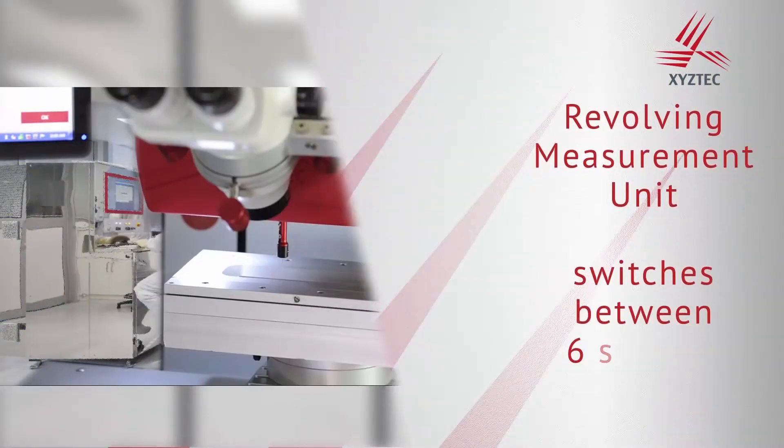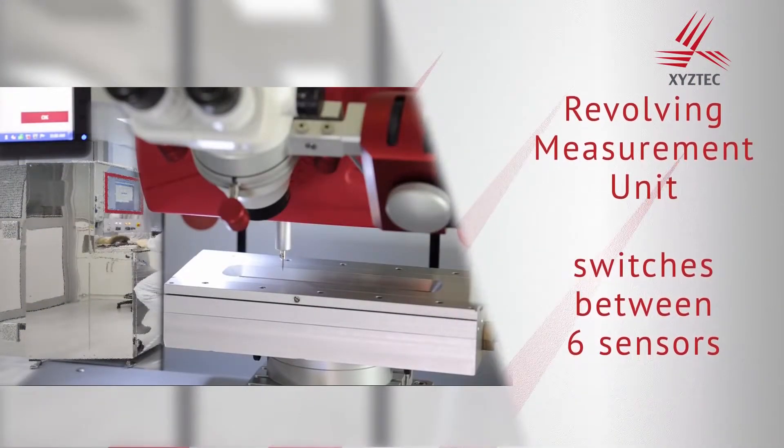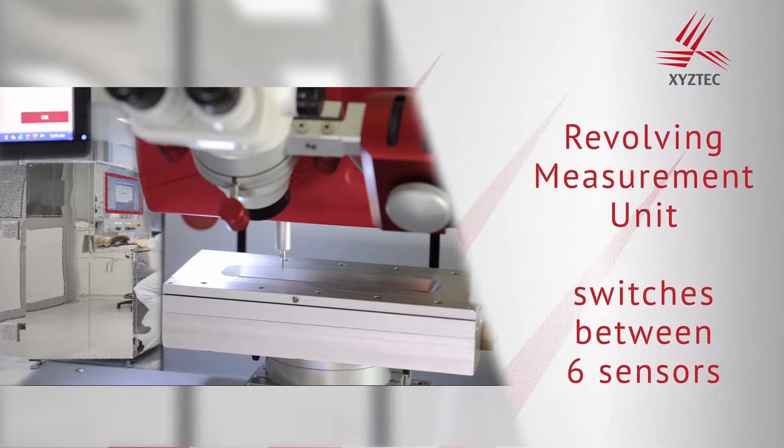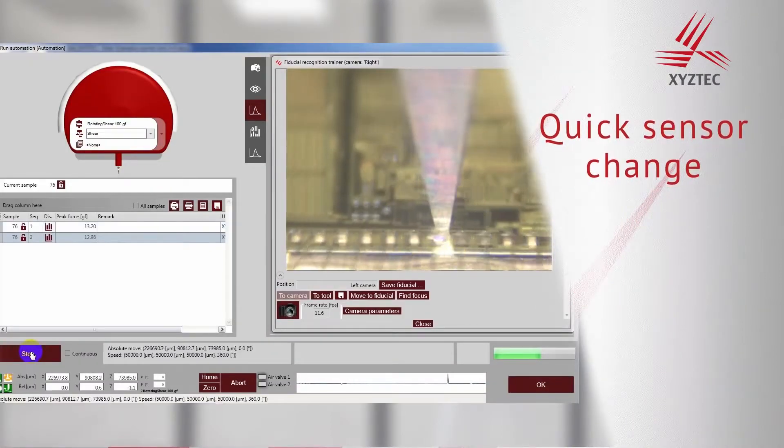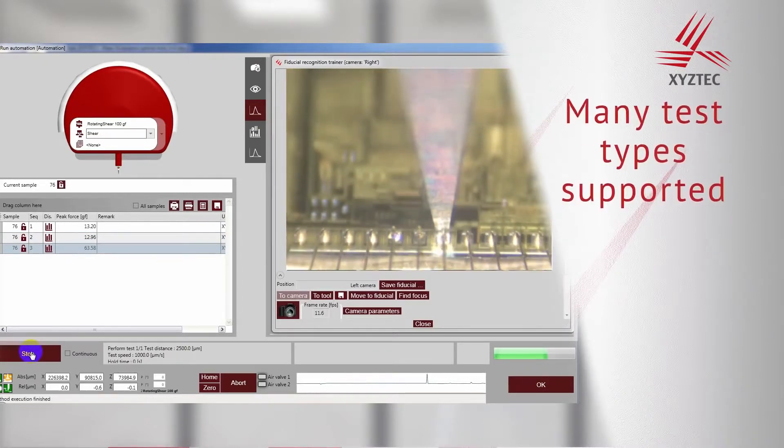Only Zeistec offers customers a revolving measurement unit that will hold up to six different sensors. Zeistec can guarantee a quick sensor change with the most extensive set of test types in the industry.